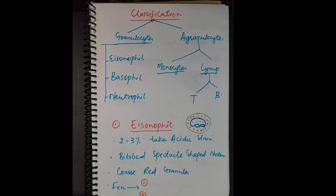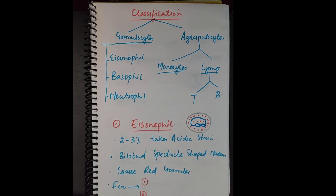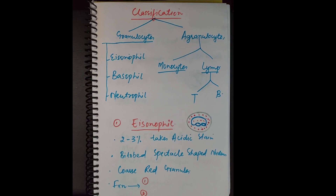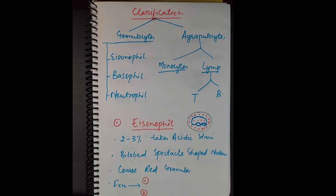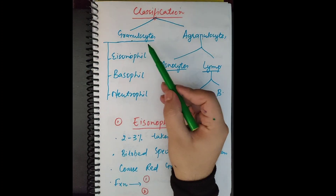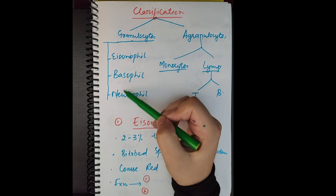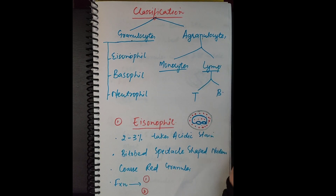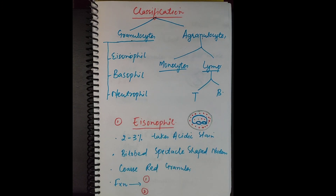In our previous video we discussed about WBCs and the classification of WBCs. Today we are going to discuss functions of different WBC cells. In the previous video we classified WBCs into granulocytes and agranulocytes. Granulocytes were of three types: eosinophils, basophils, and neutrophils. Agranulocytes were of two types: monocytes and lymphocytes. Lymphocytes were of two types: T lymphocytes and B lymphocytes.